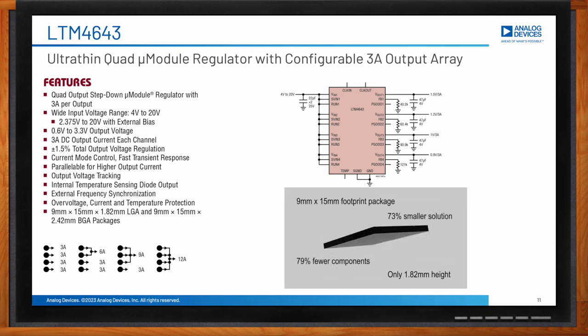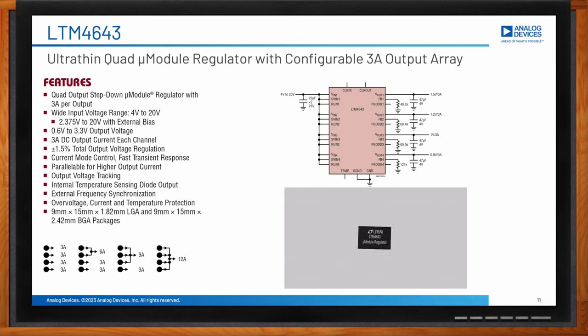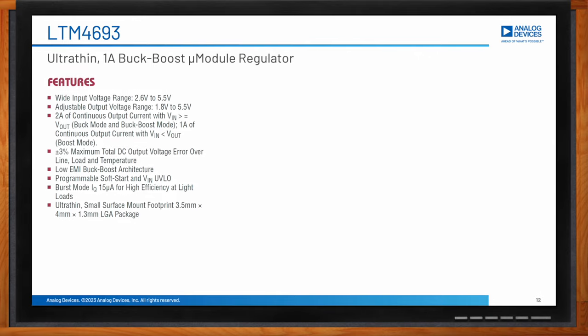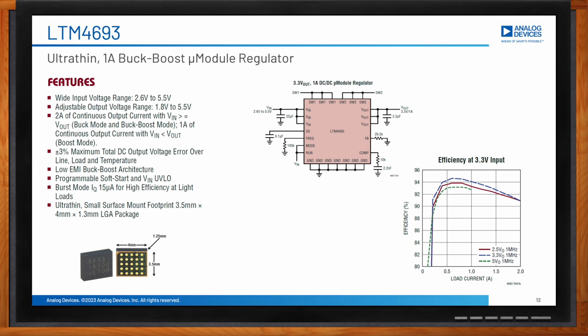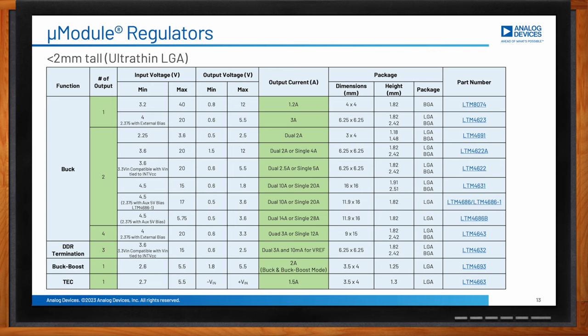What about the Buck-Boost micromodule regulator? Our Buck-Boost is a 1 amp device with an input voltage range of 2.6 to 5.5 volts and an output voltage of 1.84 to 5.5 volts. It has a small package of 4 by 3.5 millimeters and a height of 1.25 millimeters. It finds applications in telecom, datacom, industrial equipment, medical, and industrial instruments. The main feature of all these ultra-thin micromodule regulators is their height — they meet height restrictions for various applications and can be placed on the bottom side of PCBs. A selection table with datasheets and demo board information is available on our website.